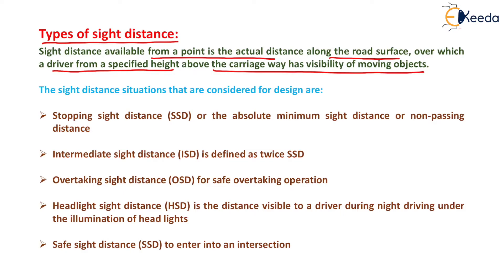We have various types of side distances. The first is stopping side distance, also called absolute minimum side distance or non-passing distance. Stopping side distance is the minimum side distance available on a highway at any spot having sufficient length to enable the driver to stop a vehicle travelling without collision with any obstruction.